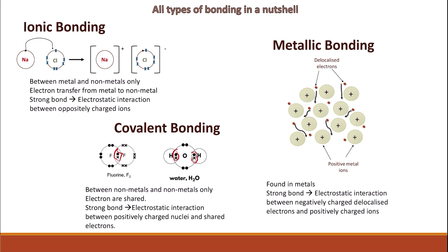And finally, there is metallic bonding. We find metallic bonding in metals, where it comes from the strong electrostatic interaction between the delocalized electrons and the positively charged ions of the metal that are formed.